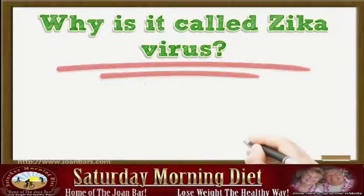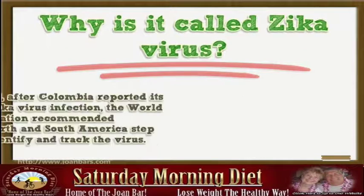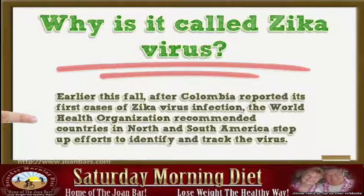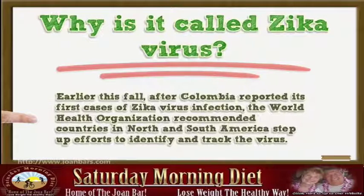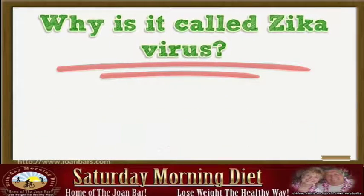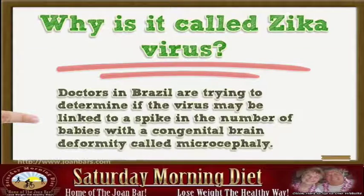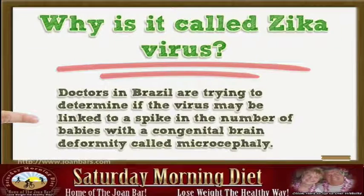Why is it called Zika virus? Because it was first found in the Zika forest in Uganda. Earlier this fall, after Colombia reported its first cases of Zika virus infection, the World Health Organization recommended countries in North and South America step up efforts to identify and track the virus. Cases have been reported in the Yucatan in Mexico and the Caribbean. Doctors in Brazil are trying to determine if the virus may be linked to a spike in the number of babies with a congenital brain deformity called microcephaly.